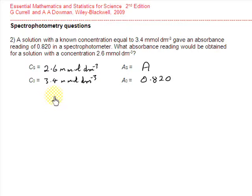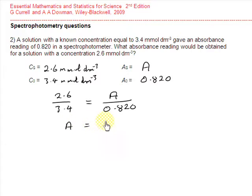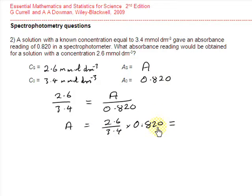Substituting these values into our proportionality equation, the ratio of the two concentrations, 2.6 divided by 3.4, as both have the same units, just becomes the ratio of the two values. This equals the ratio of the two absorbances, A divided by 0.820. Rearranging, A equals 2.6 divided by 3.4, multiplied by 0.820, giving an absorbance for the unknown solution of 0.627.